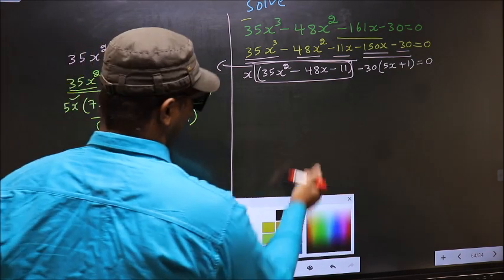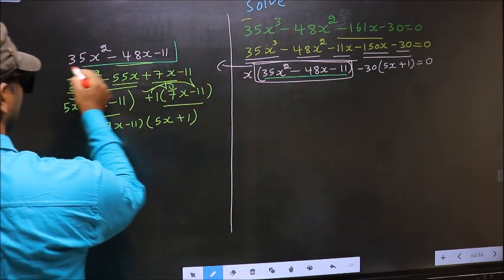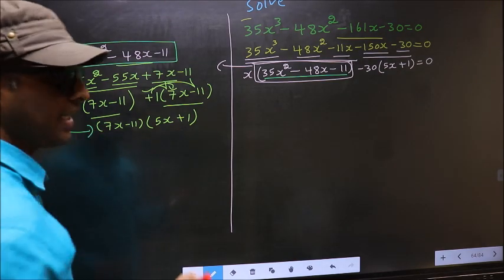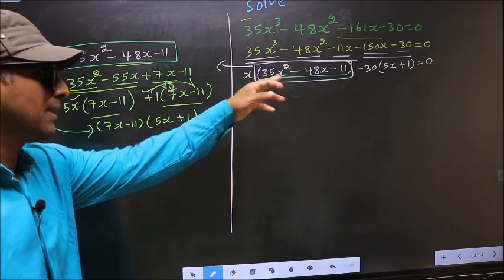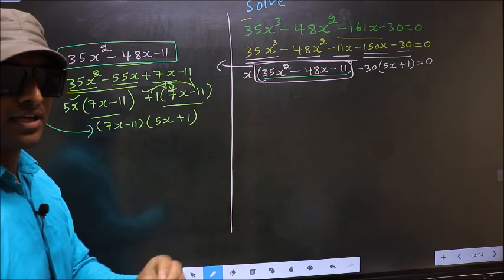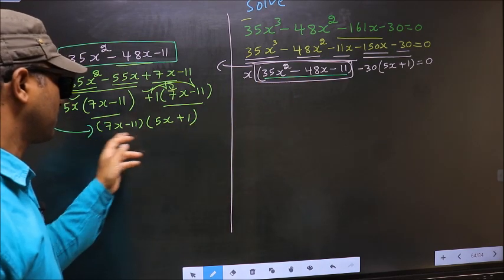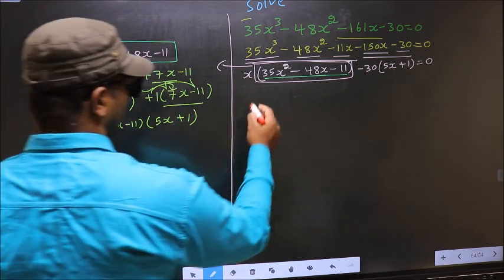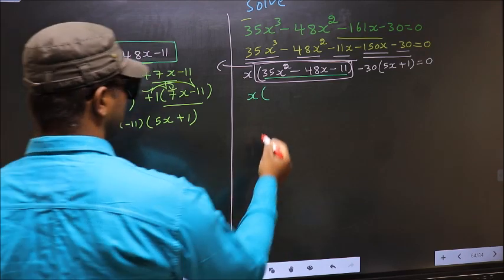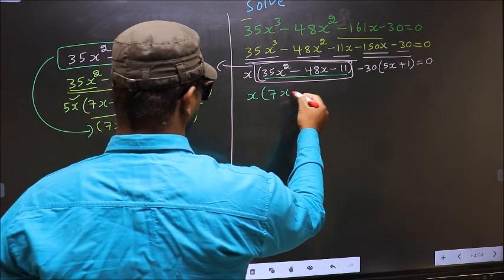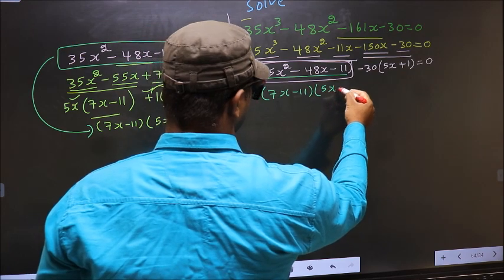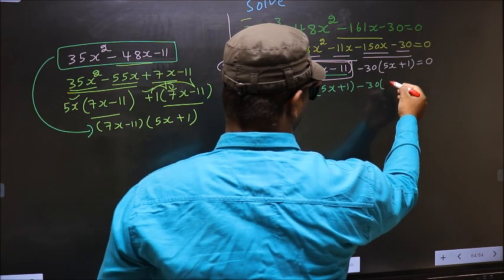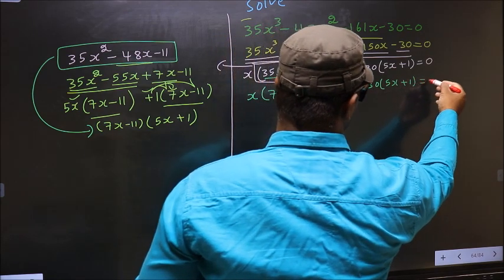In place of the quadratic we now write (7x minus 11)(5x plus 1). So the equation changes to x times (7x minus 11)(5x plus 1), with no change to the remaining term, equal to 0.